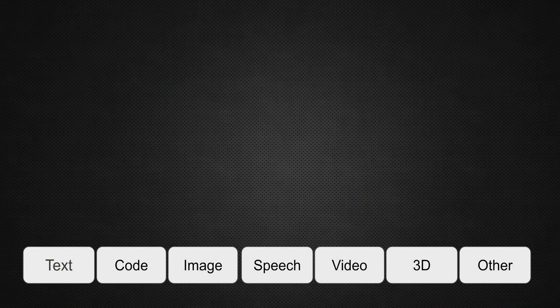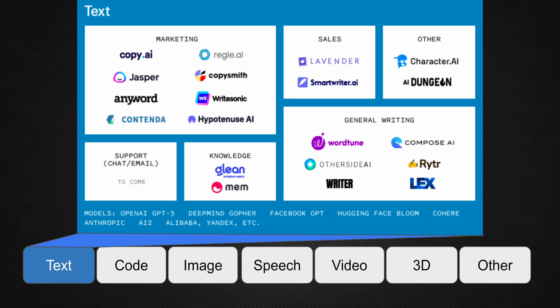Now let's take a look at the generative AI segments and how various startups are bringing their tech to market. First, we are going to start with the text segment, where several startups are applying these models in categories such as marketing, sales, support, generating knowledge content, general writing, and other categories. Most notable companies are Jasper as well as AI21, whose product is Writesonic. These companies have received significant funding from the venture community, and in the coming days, more venture capitalists are going to show interest in generative AI, with more new startups entering the field.